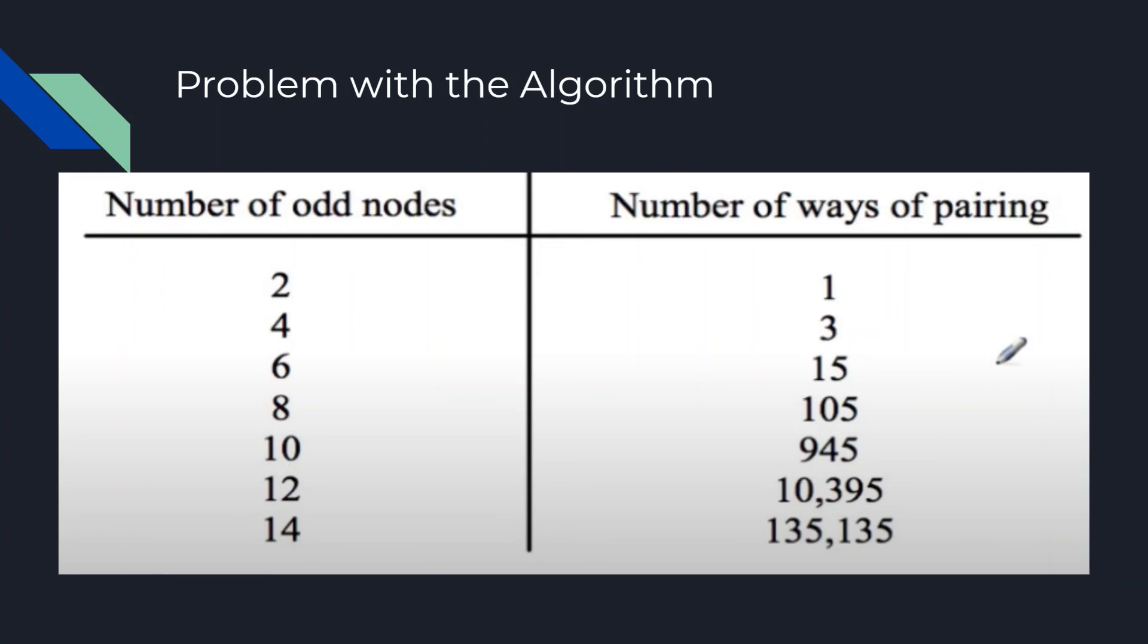So the main problem with the Chinese Postman algorithm would be having too many odd nodes. This could be a problem because it seems like an exponential growth on the number of ways to pair. So you can see that if we have two nodes, then there's only one way of pairing. However, if we have four odd nodes, then as from our example, we can see that there are three ways of pairing. From six nodes, it grows to 15 ways of pairing. Eight becomes 105. Ten nodes becomes 945 ways of pairing. And finally, up to 14 or even more, there's just a lot of ways of pairing that slows down this algorithm drastically.